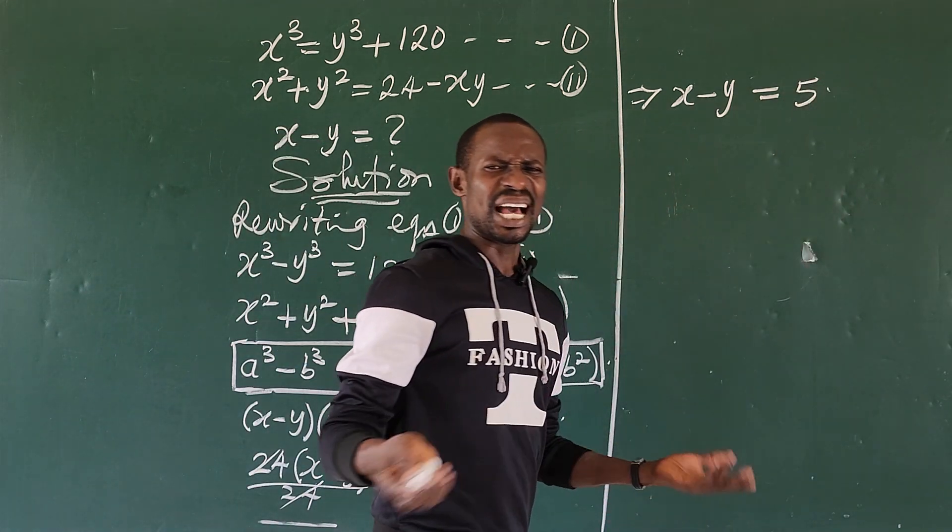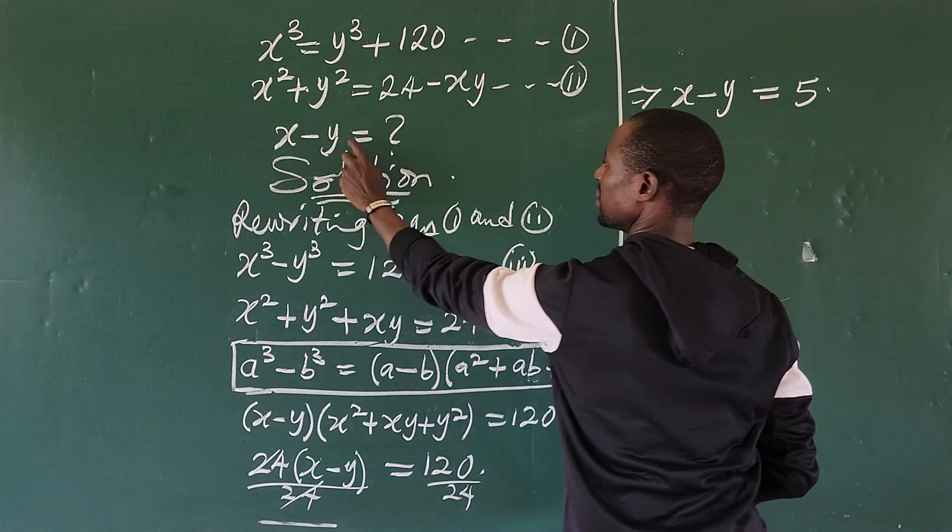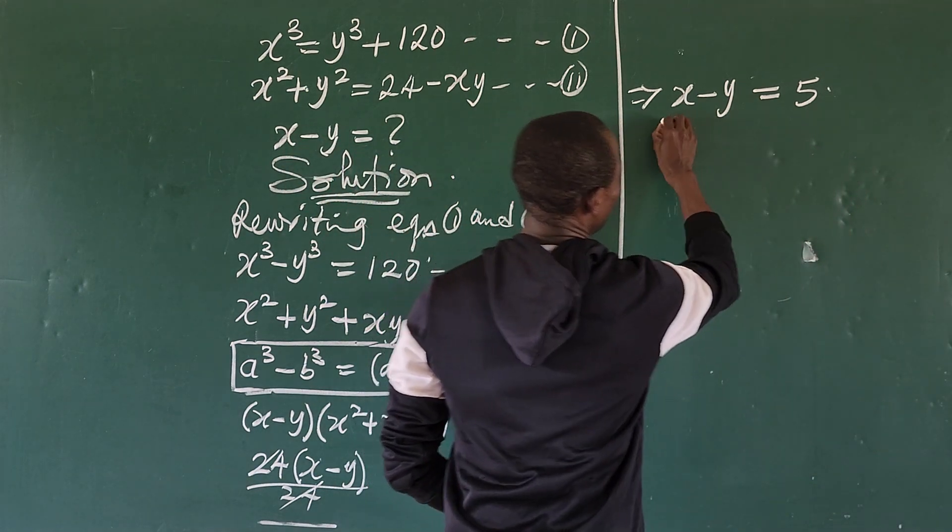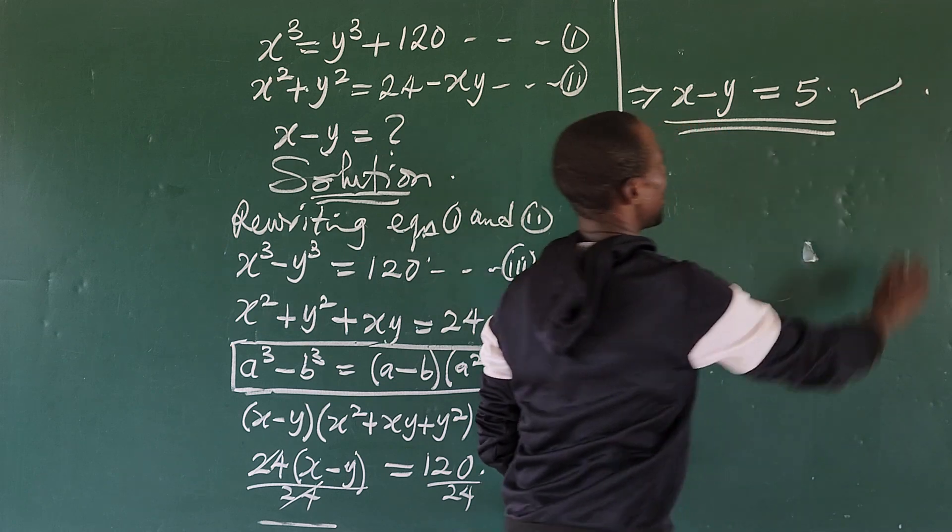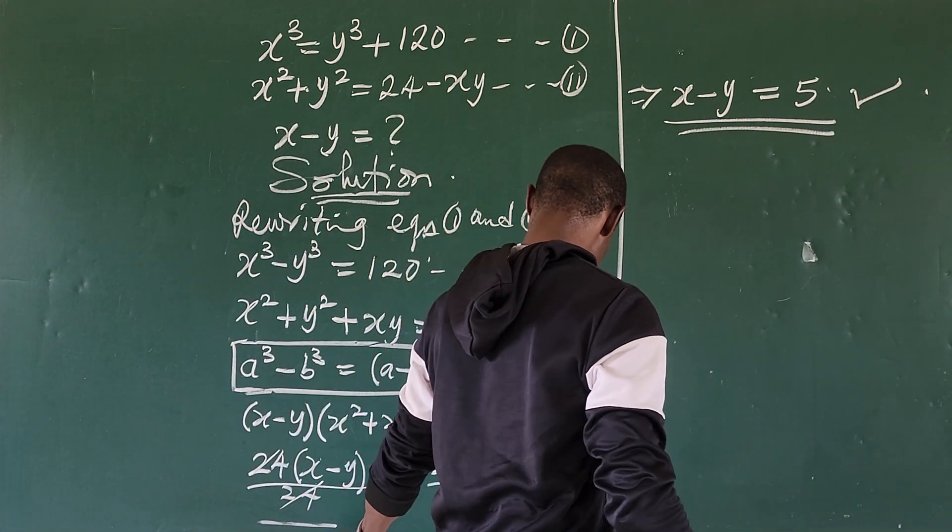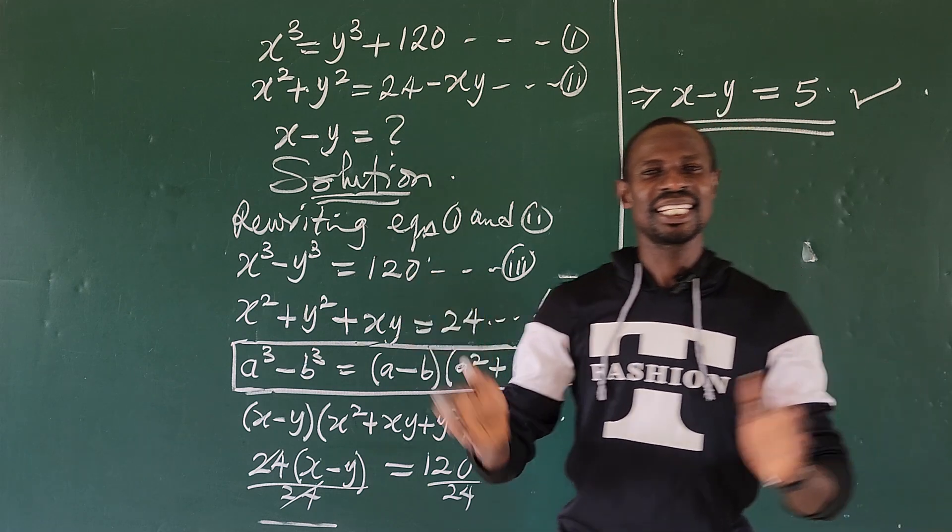What were we asked to look for? x - y. Therefore we have x - y to be 5.